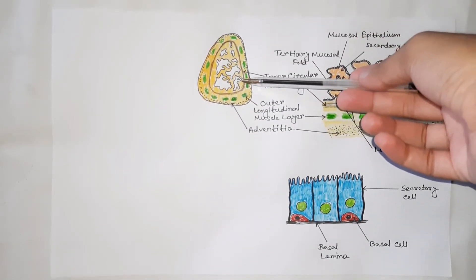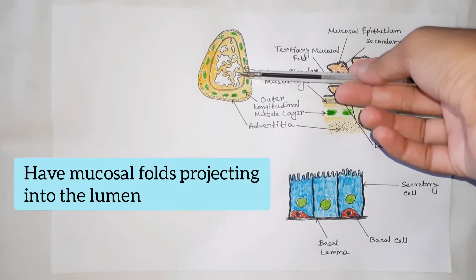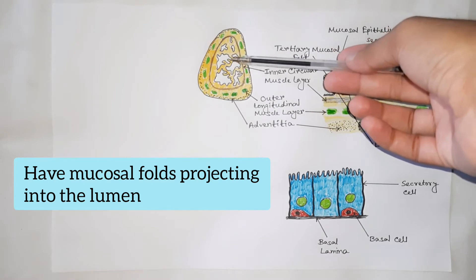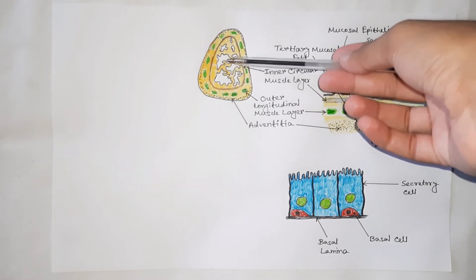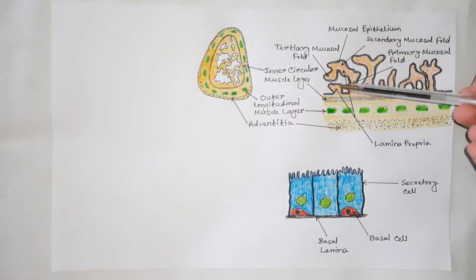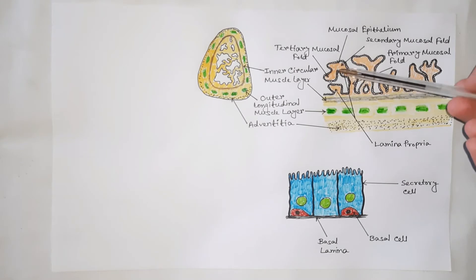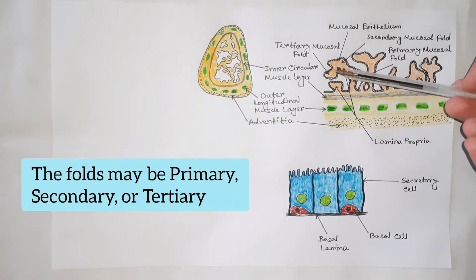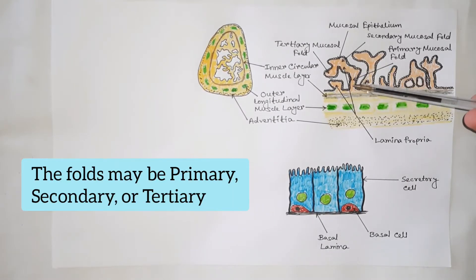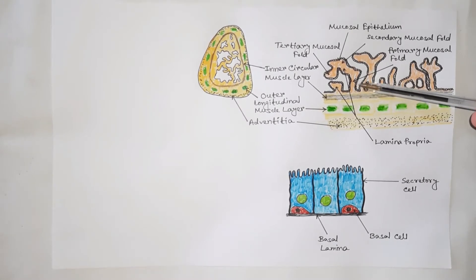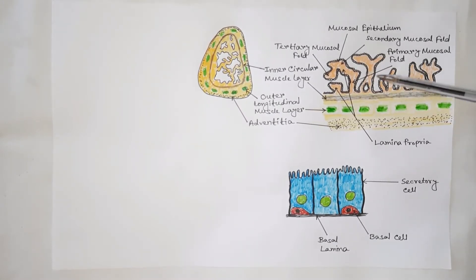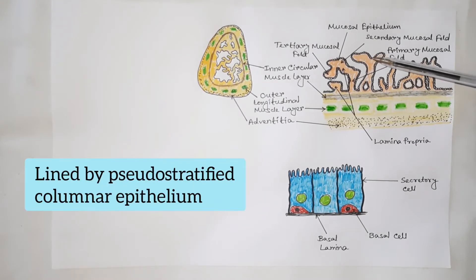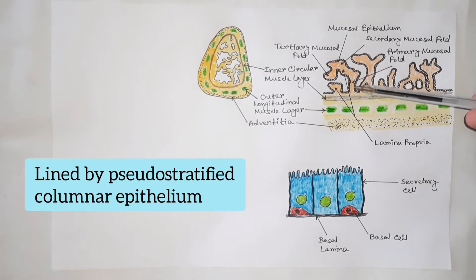Seminal vesicles have mucosal folds which project into the lumen. If we enlarge this portion, the folds are clearly seen. The folds may be primary, secondary, or tertiary, and they increase the secretory surface area. The folds are lined by pseudo-stratified columnar epithelium.